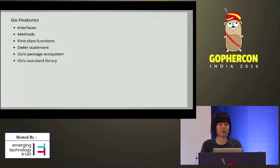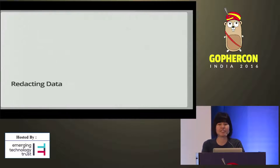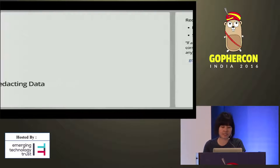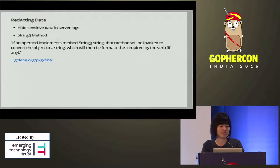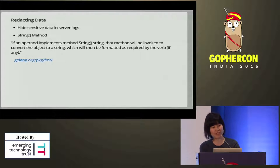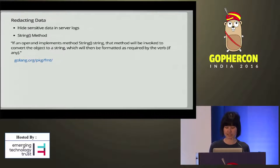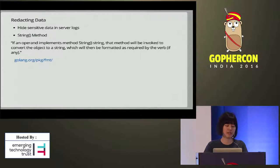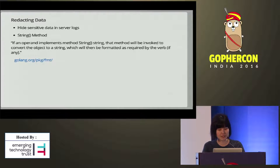This is a quick list of some of the features I'll be touching on. First: redacting data in server logs. If you have sensitive data in server logs and you want to redact it, let's see what features of Go we can use to hide that data. We have a String() method in Go. Looking at the node in the fmt package, it says that if an operand implements the String() method, that method will be invoked to convert the object to a string, which will then be formatted as required by the verb, if any.